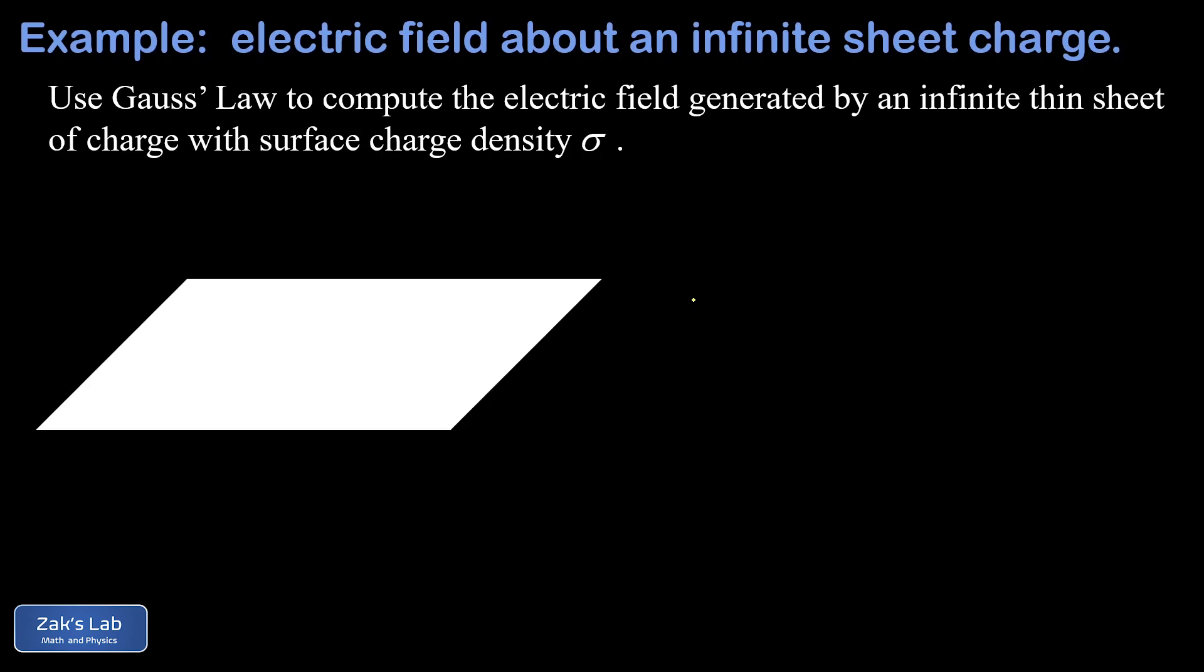So the first step in applying Gauss's law is to choose a Gaussian surface that shares the same symmetry as our problem. The critical point there is that our electric field should have a constant magnitude over the Gaussian surface and it should be perpendicular to that surface.